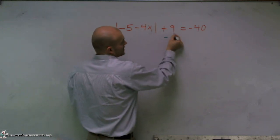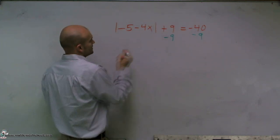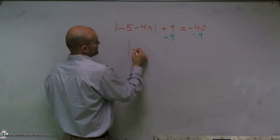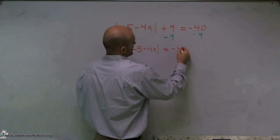So the first thing I'm going to do is I'm going to subtract this 9 to the other side. Therefore, now I will obtain the absolute value of negative 5 minus 4x equals a negative 49.